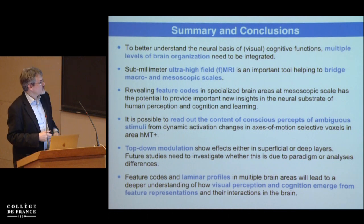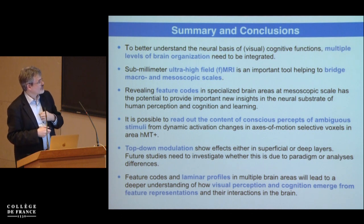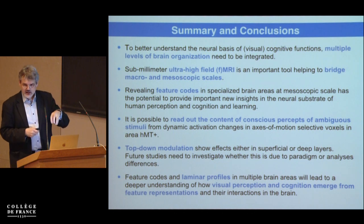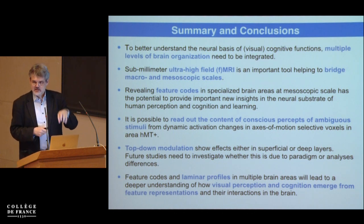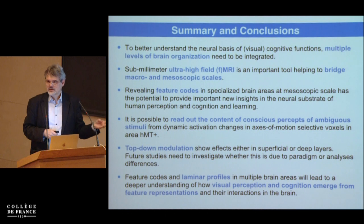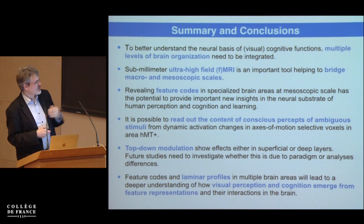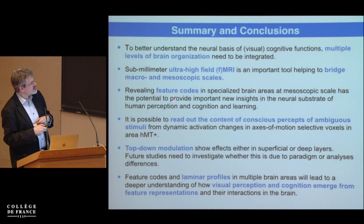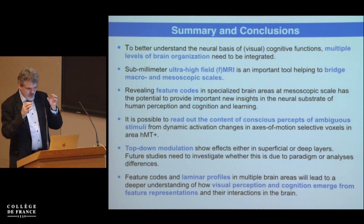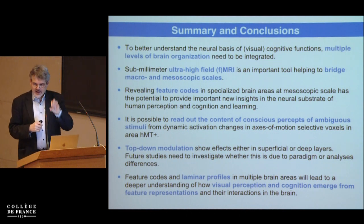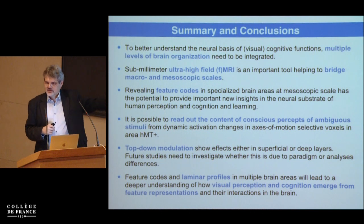In summary, I hope you have seen the potential of this approach for going beyond areas and networks to a new way of understanding brain organization — at the level of features and layers. This is now becoming a field of its own, with papers and symposia appearing and more labs acquiring 7T scanners. I believe it will help us understand the brain better, and also learning better: once we map features in an individual, we can track how those features change as the subject learns. Thank you very much.